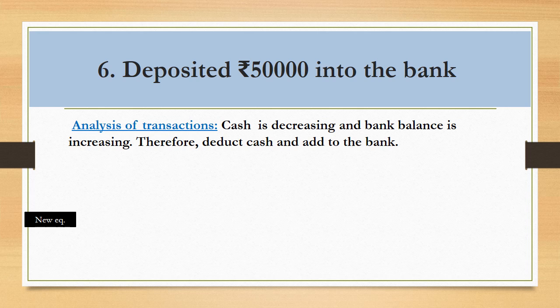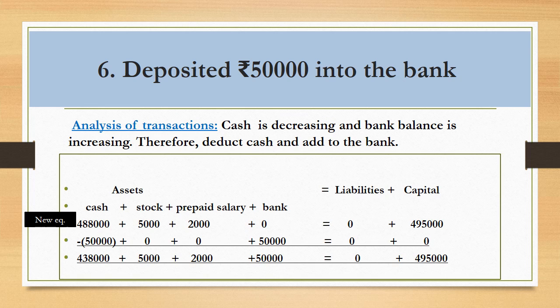Next, deposit rupees 50,000 into the bank account. When a businessman deposits money in his bank account, his cash balance reduces and a new asset — bank balance — is created. We now have four assets: cash, stock, advance salary, and bank balance. The effect is a reduction in cash by 50,000 and an increase in bank balance by 50,000. Both sides are again equal to 4,95,000, hence our equation is correct.